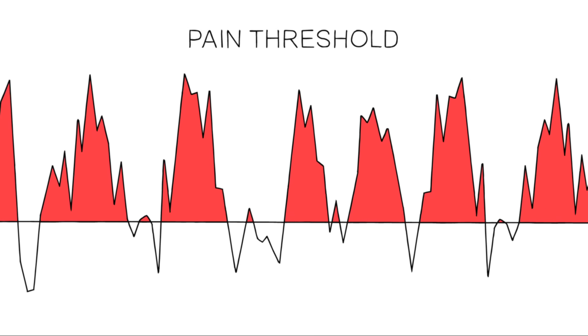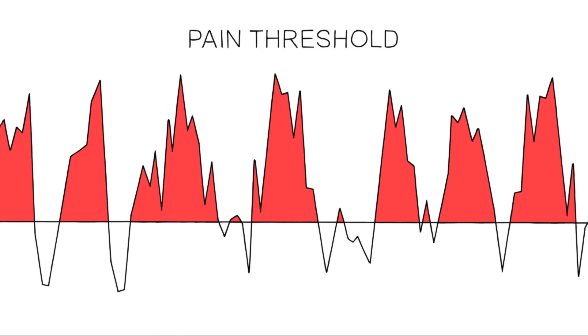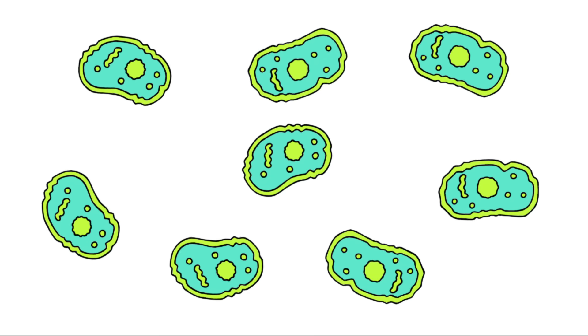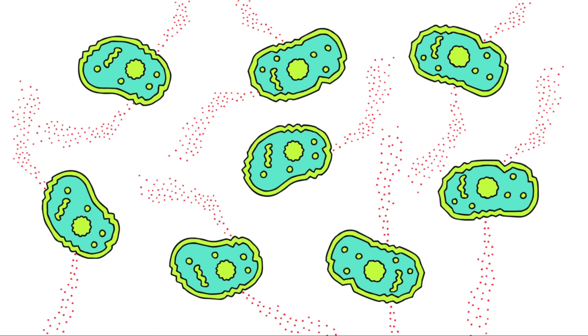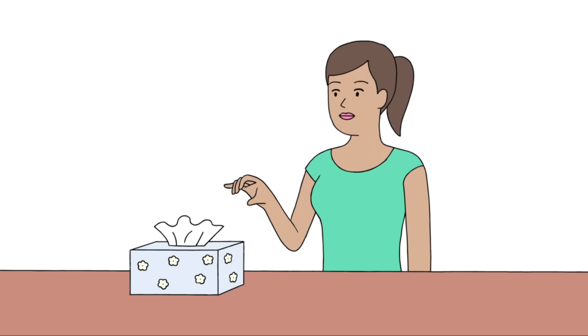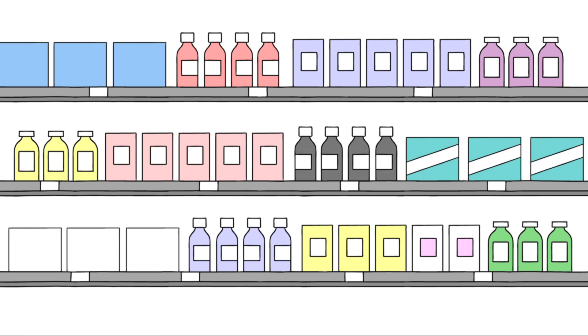But the pain threshold isn't set in stone. Certain chemicals can tune nociceptors, lowering their threshold for pain. Now, when cells are damaged, they and other nearby cells start producing these tuning chemicals like crazy, lowering the nociceptor's threshold to the point where just touch can cause pain. And this is where over-the-counter painkillers come in.